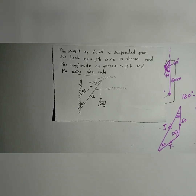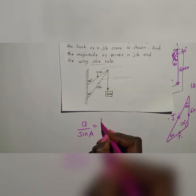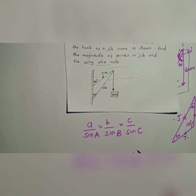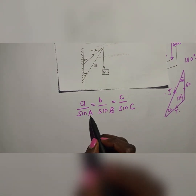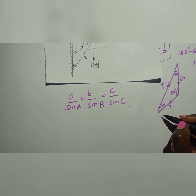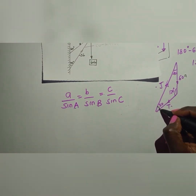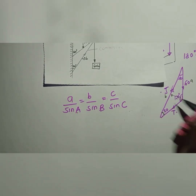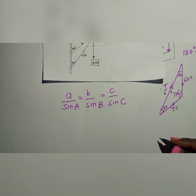In the sine rule: a/sin(A) = b/sin(B) = c/sin(C). Now let's place these values in our triangle. The angles A, B, C are the angles of the triangle. The angle of 20 degrees — the side directly opposite is our 'a', which is 60 kN. The angle of 120 degrees — the side directly opposite is 'b' for the jib (J). The angle of 40 degrees — the side opposite is 'c' for the tie (T).